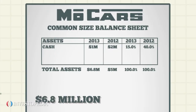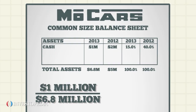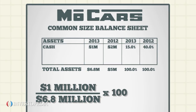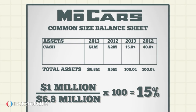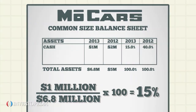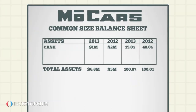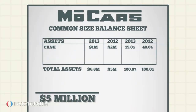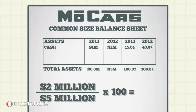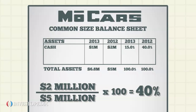If MoCars' total assets are $6.8 million and it has $1 million in cash, then the amount of cash that the company has on hand is about 15% of its total assets. In 2012, however, MoCars' total assets were $5 million, but it had $2 million in cash, representing 40% of its total assets.